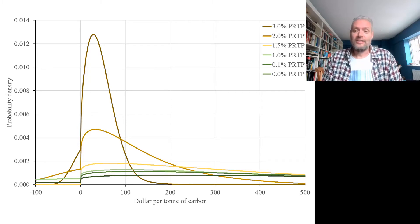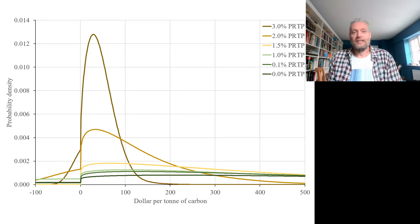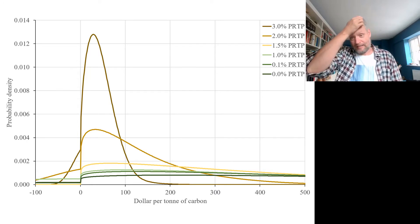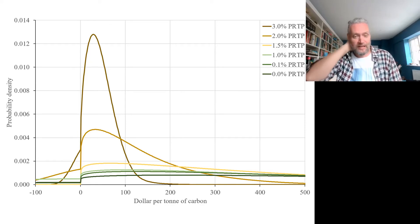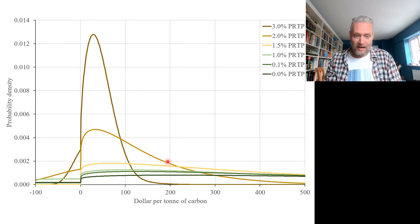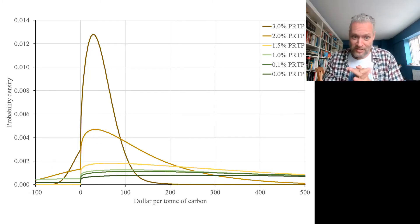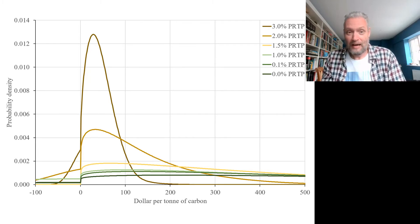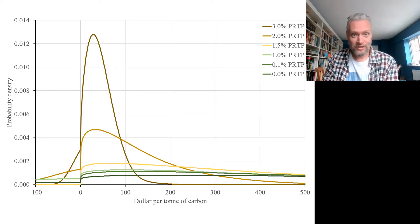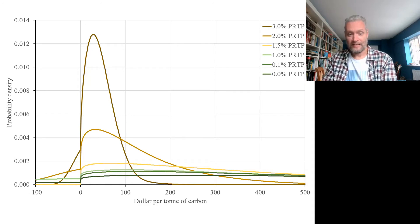The PRTP is the pure rate of time preference — that's the utility discount rate. The consumption discount rate is just 2% plus the pure rate of time preference. What you see is that the discount rate matters. But you also see that the uncertainty is right-skewed — just as with the totals, the marginals are right-skewed. That is, the right tail is much heavier than the left tail; negative surprises are more likely than positive surprises. And the discount rate matters quite a bit: the discount rate is essentially how much emphasis you place on the future. The more you care about the future, the more you care about climate change, and the higher your social cost of carbon would be.